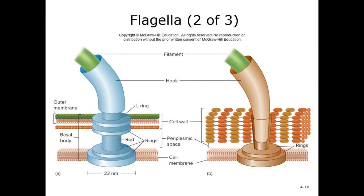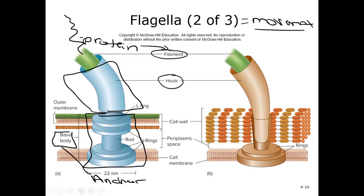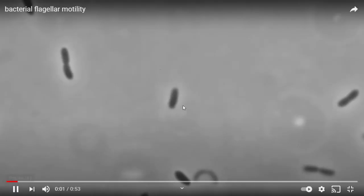The purpose of the flagella is they allow for movement. There's three main parts: the basal body, which anchors the flagella into the cell wall; the hook, which is the part that goes out of the cell; and the filament, which is the actual tail part made out of protein. They can't just swim in a straight line. Instead, they do something called a run and tumble. They do the tumble to gain momentum and then shoot off for the run.